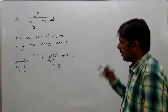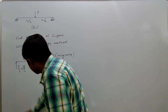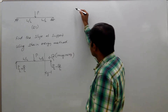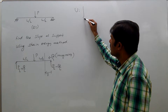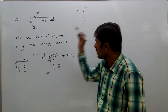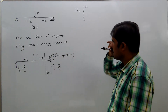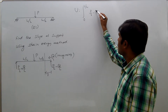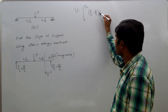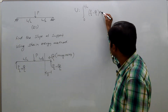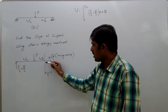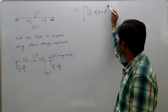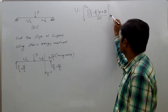Now first we will find the strain energy. For the right portion, taking x distance from the right, strain energy equals integral from 0 to L/2. The bending moment M for this portion is: P/2 minus Q/L into x, plus Q. That is the bending moment expression. So the strain energy is M squared by 2EI into dx.